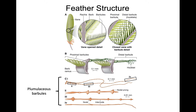Many of you have picked up a feather and can unzip the vane by separating the individual barbs. If you're careful, you can zip those back by replacing the hooklets on the distal barbules onto the proximal barbules they overlap. However, if you keep unzipping and rezipping it, you eventually break off those hooklets and can no longer maintain that integration.